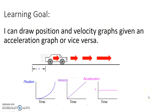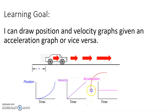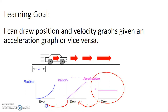The learning goal for this video is: I can draw position and velocity graphs given an acceleration graph, or vice versa. We're starting with an acceleration graph and asking how do we draw the velocity graph, and from there how do we draw the position graph.